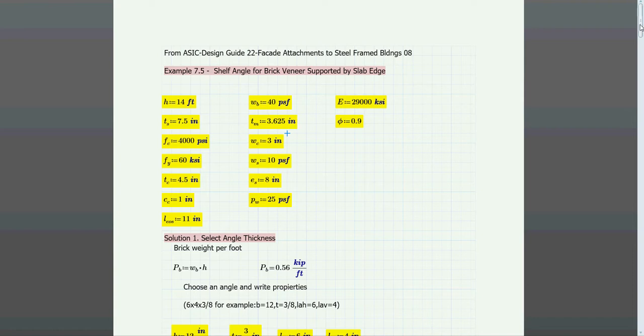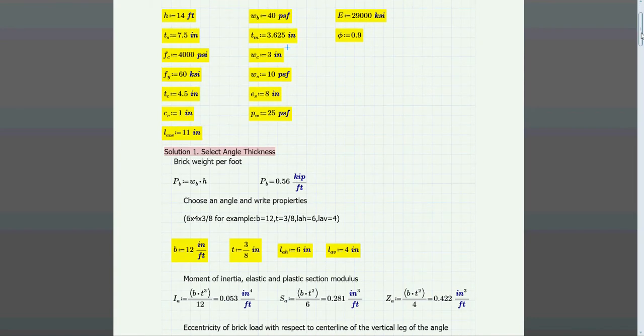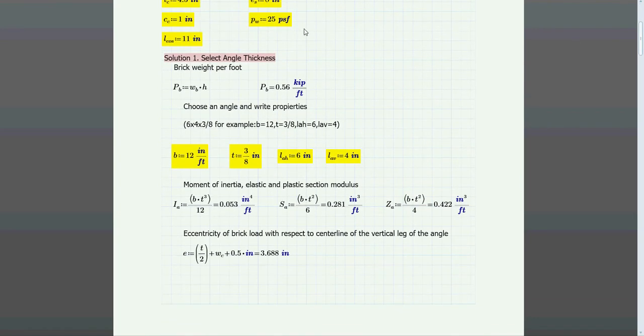This is a shelf angle that has a brick veneer on top of it and it's transferring its load. Basically it's going to have four steps. The first step is to select the angle thickness so that it will support the load of the brick.